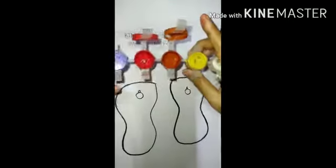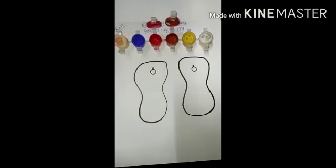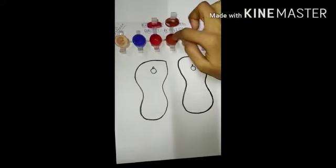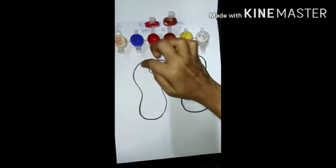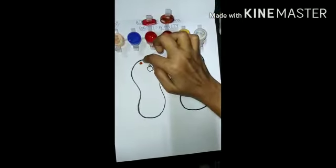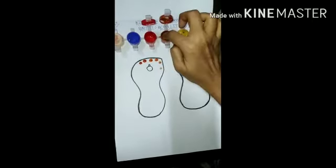Now we are doing finger dabbing painting. Now brown color we are taking like this. Like this you have to make dots. It's so easy.